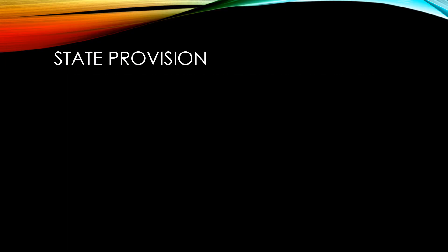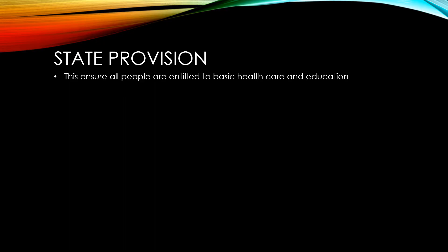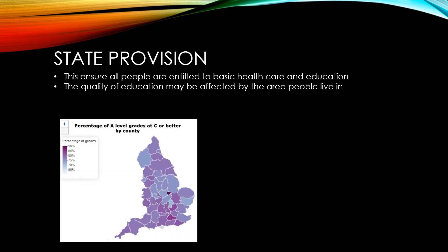State provision ensures all people are entitled to basic healthcare and education. However, the quality of education may be affected by the area people live in, with people in lower socioeconomic areas likely to have worse quality schools. This perpetuates the gap between rich and poor.